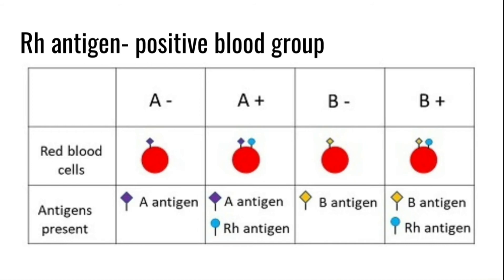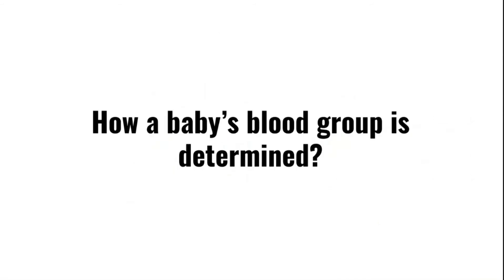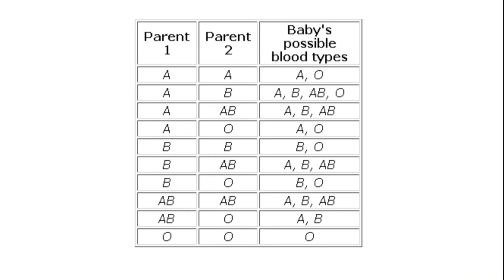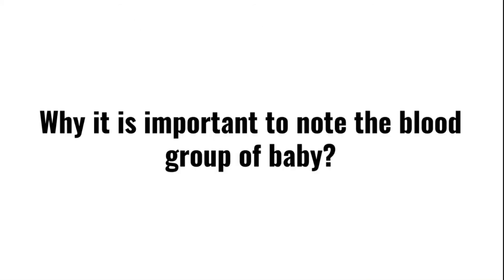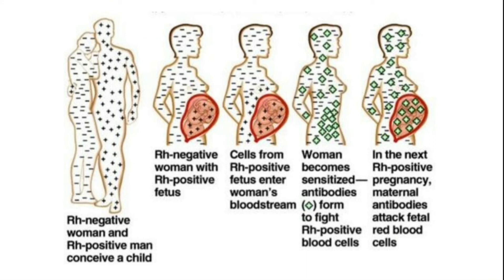Next, we can see how a baby's blood group is determined. The baby's blood group is determined by the blood group of the parents. In this table, all the possible blood types are given. It is very important to note the blood group of the baby, because if a mother's blood is negative and the baby's blood is positive, the baby may get some anemia-like problem as already mentioned.